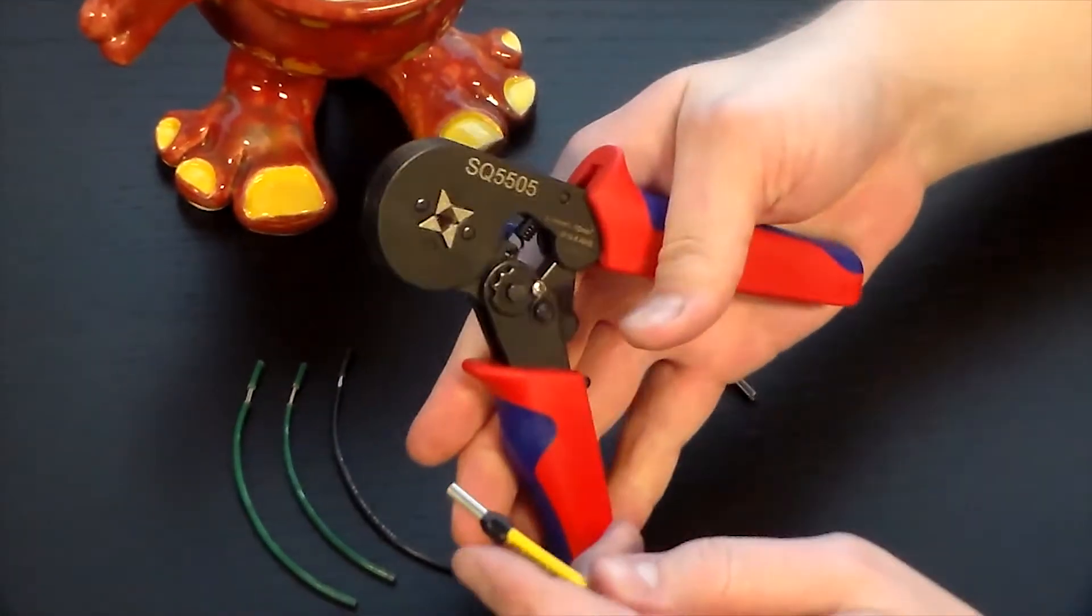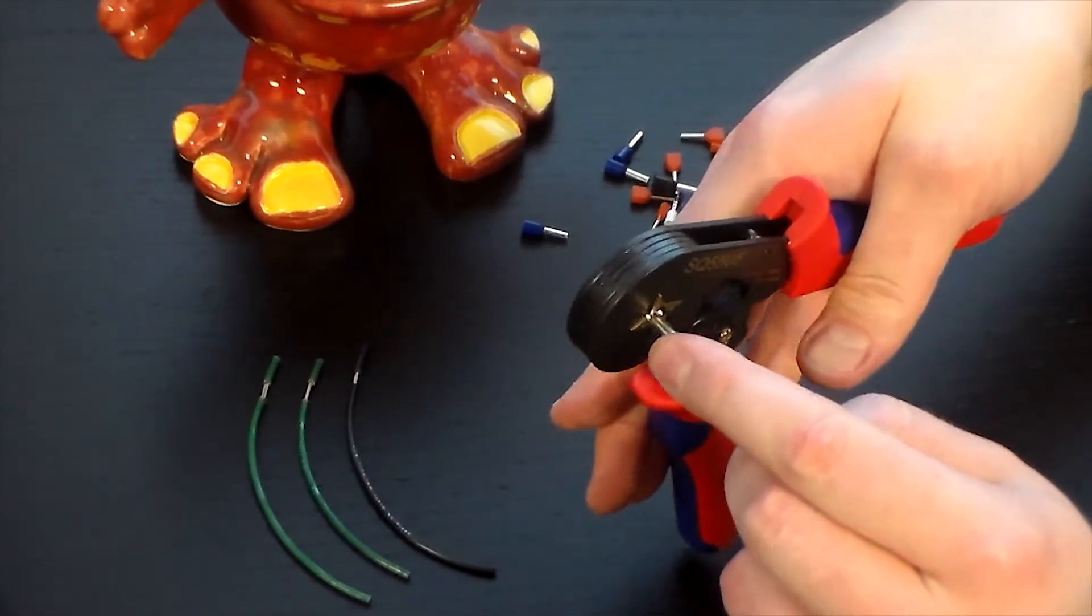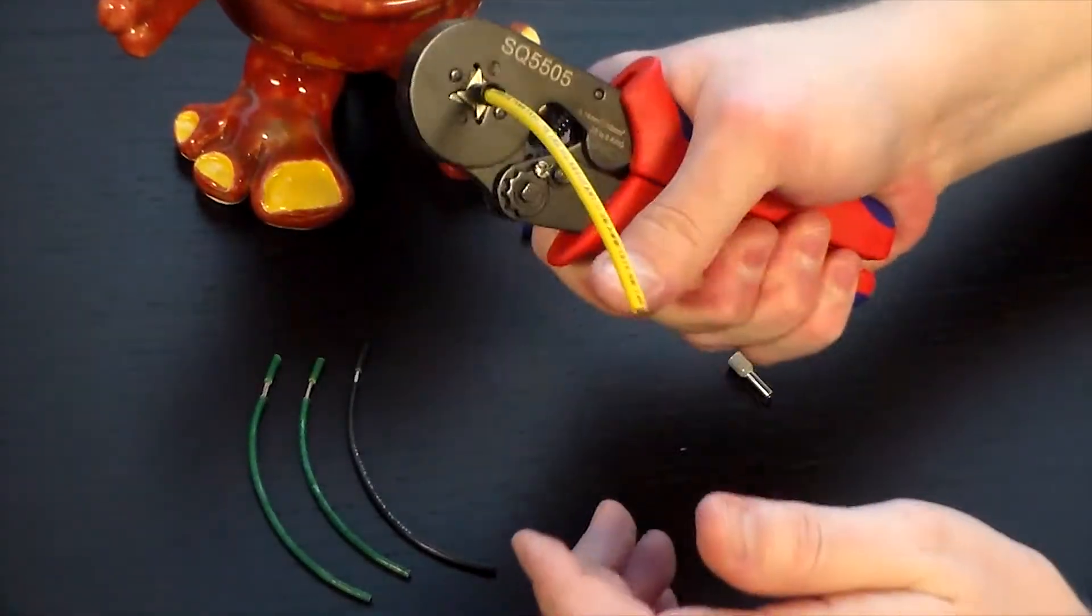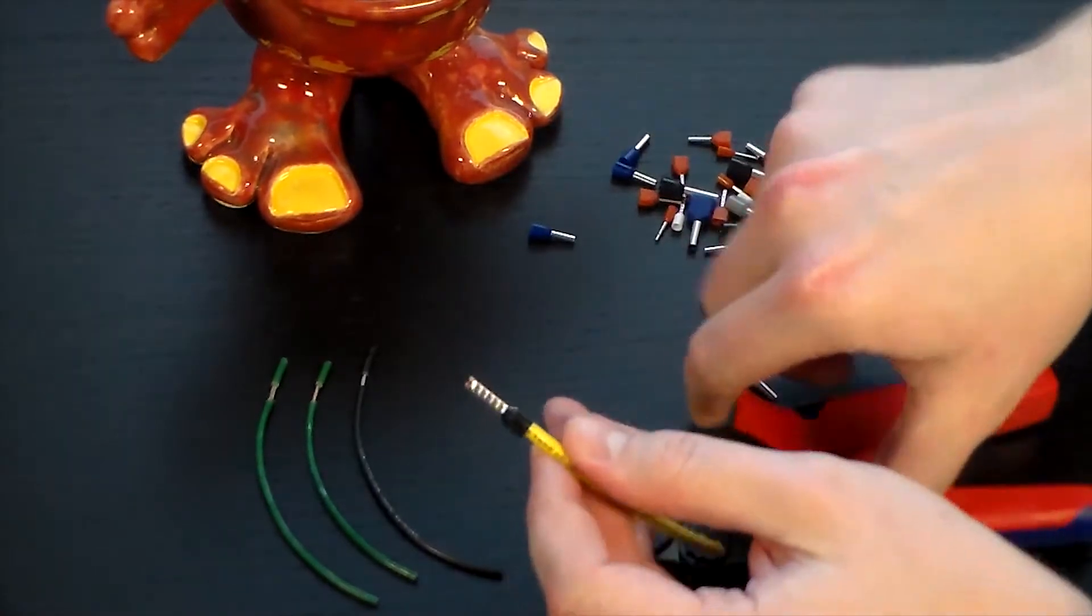Now, this tool is 28 to 10-gauge, so whether it's a 28 or a 10-gauge or anything in between, you just insert it, crimp it closed, and there you have it. Gives it a perfect crimp every time.